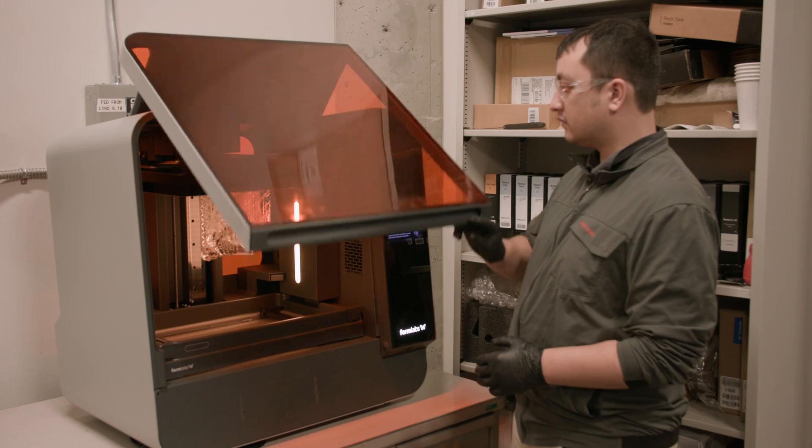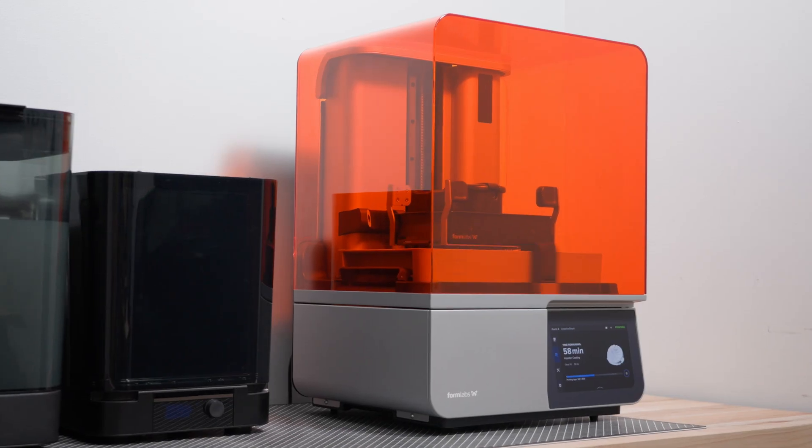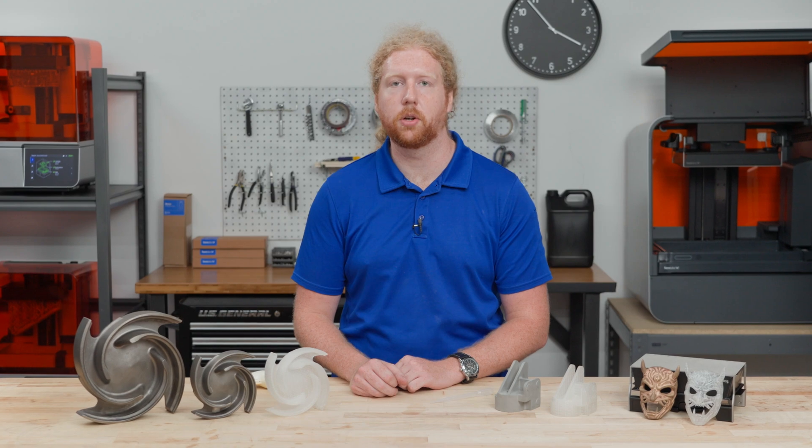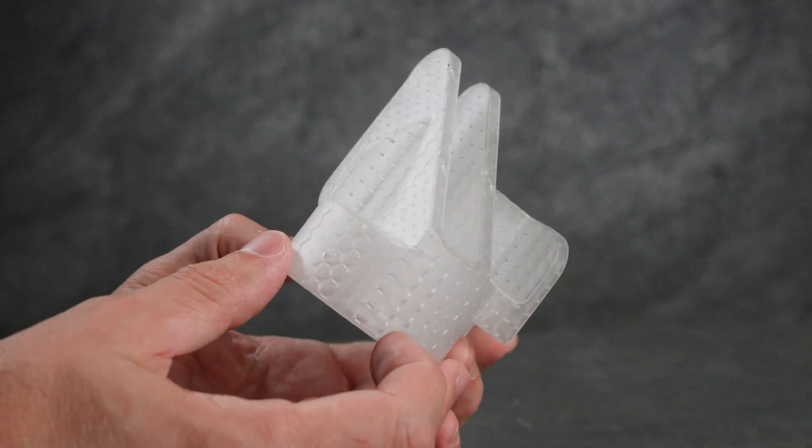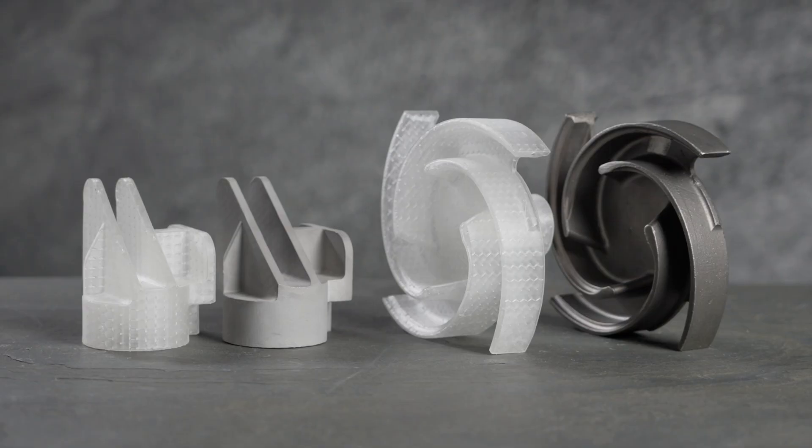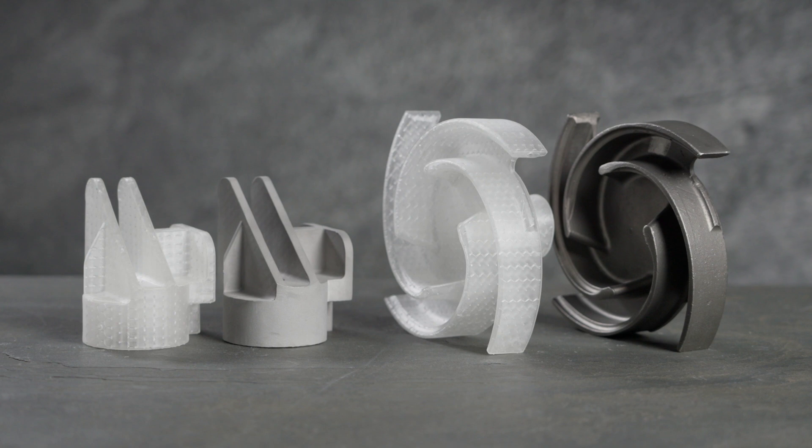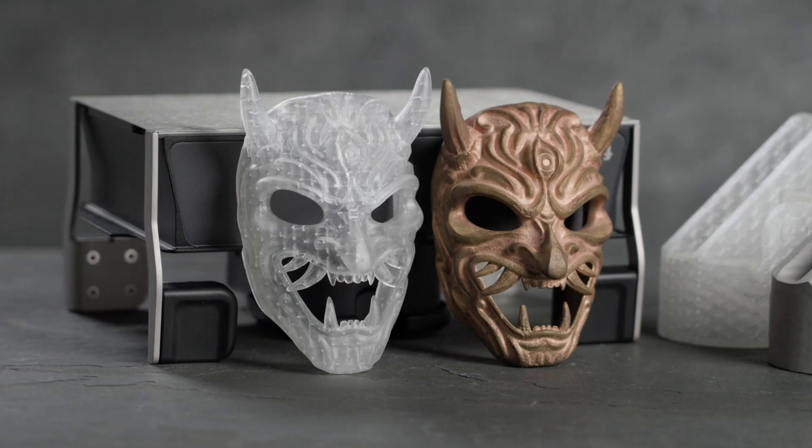3D printing has made it possible for foundries to directly print patterns, enabling design-to-wax times under a week. Formlabs Clear Cast resin has been tested for burnout and expansion properties and enables directly printed patterns for industries from aerospace to industrial manufacturing to sculptural artwork.